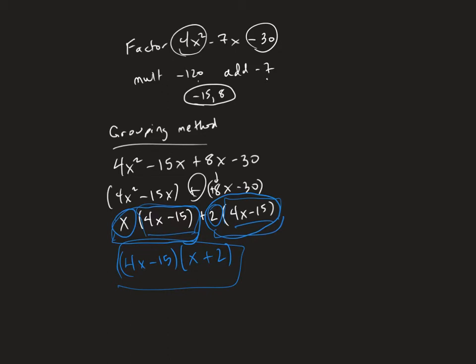Now, let me show you another method that's very similar. This is called the box method. Same first step. The two numbers that multiply to -120 and add to -7, we find the numbers -15 and 8. But this time, instead of writing it in grouping, we're going to put a box.